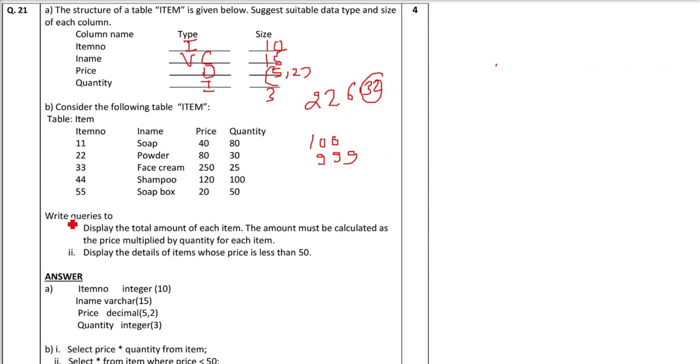Now coming to the second part, b. Consider the following table item. This is item. So there are 4 columns here which we just made by DDL. And then we have these 5 records. Or the field, the rows. Display the total amount of each item. The amount must be calculated as the price multiplied by quantity of each item.